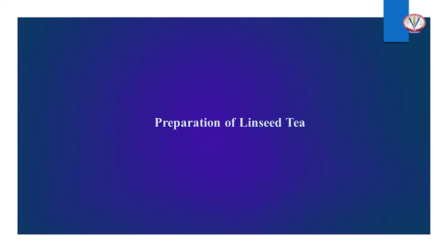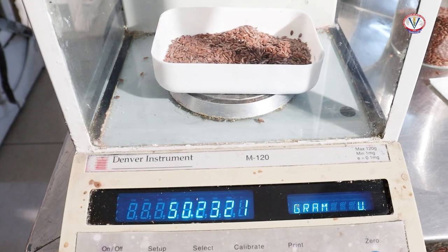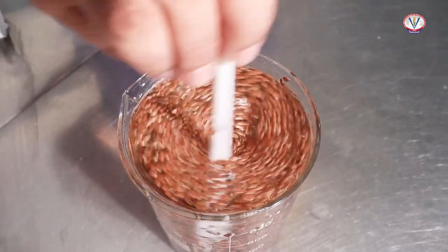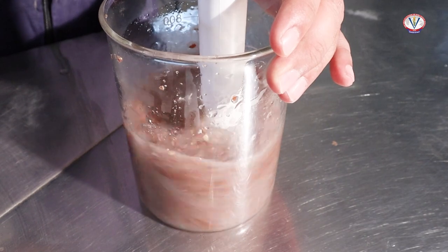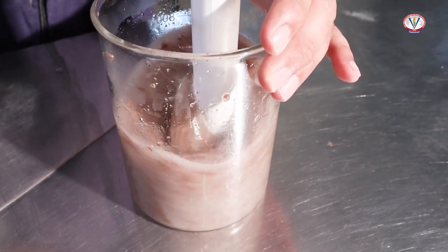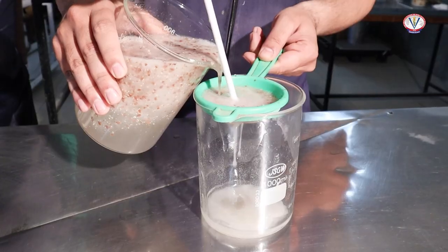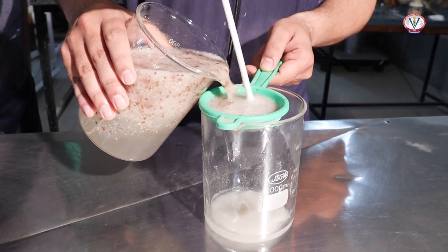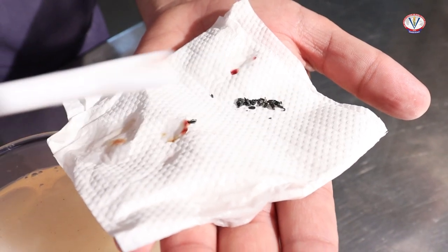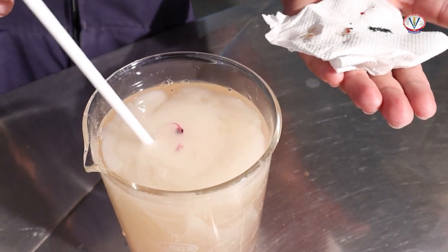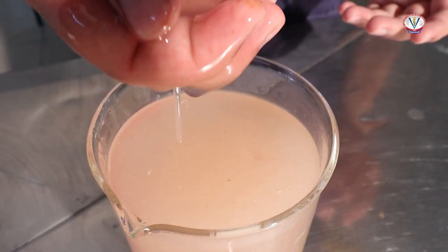Preparation of linseed tea: Linseed, commonly known as alsi, can be taken at 50 grams per liter. These seeds are mixed in hot boiled water and crushed with a hand mixer, or previously crushed seeds are mixed in water and then boiled. The solution is sieved using a tea strainer, then a small pinch of potassium permanganate crystals is added for antiseptic properties and mixed properly, giving a light pink color and stringy consistency.